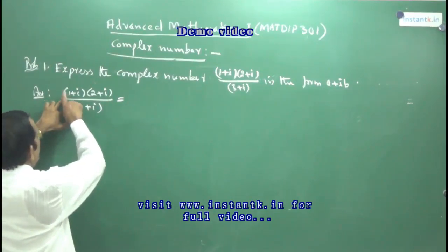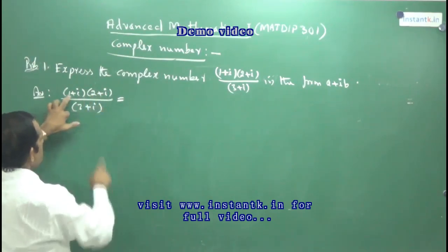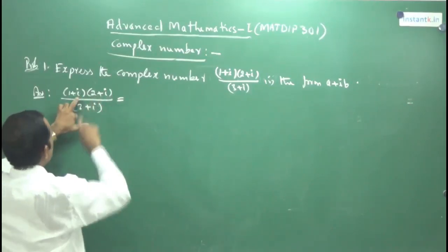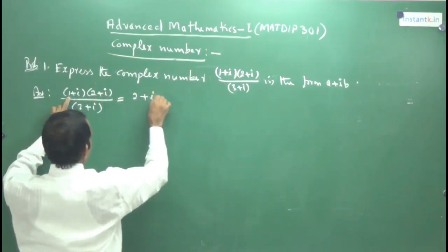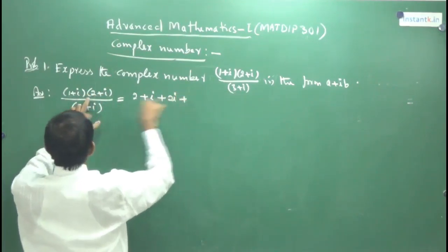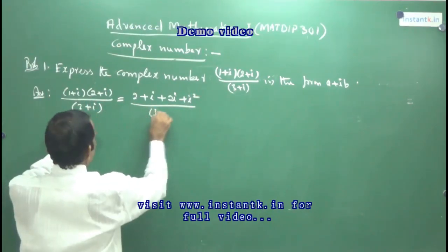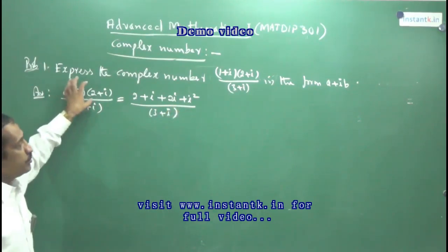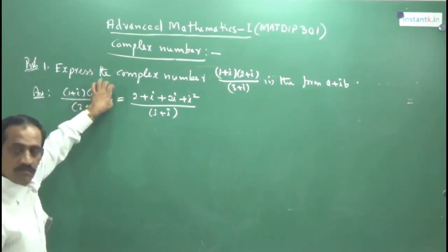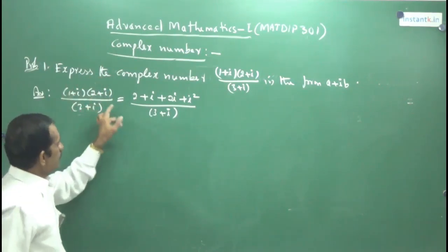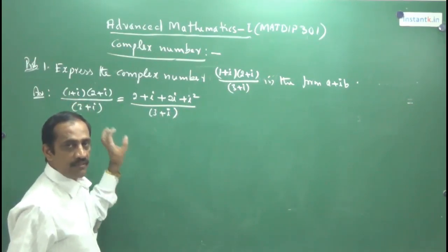How to multiply (1+i)(2+i)? Take 1 and multiply: 1 into 2 plus 1 into i. Next, multiply i: i into 2 plus i into i. So you get 2 plus i plus 2i plus i squared, divided by 3 plus i. You have to put brackets because each complex number is one unit — if you don't put brackets, you won't get the correct answer. Take care while writing the steps.